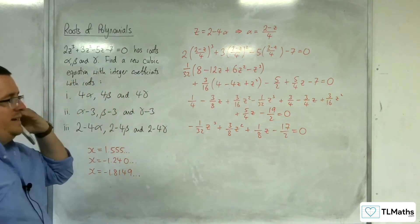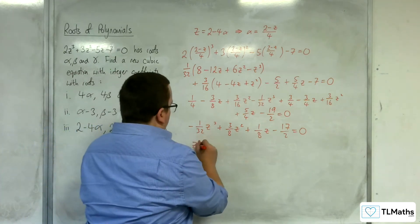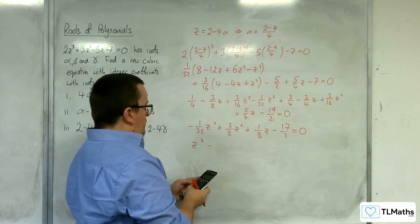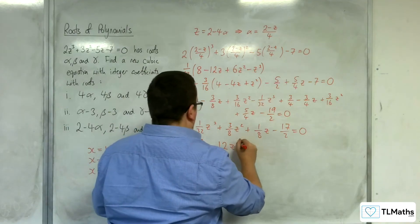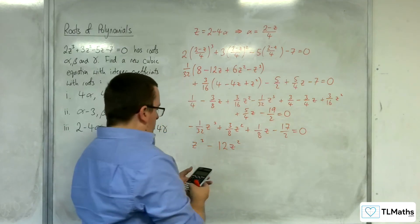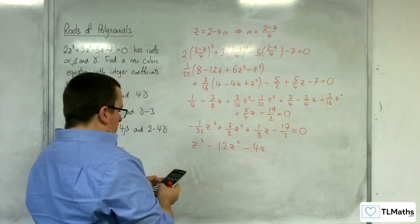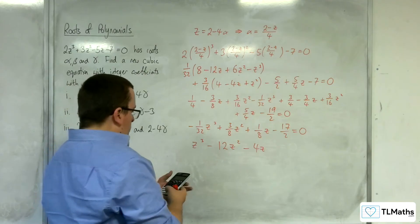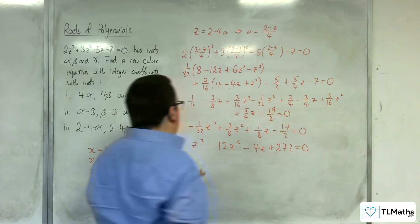Now we need integer coefficients, so I'm going to multiply through by minus 32. So we get z cubed, then minus 32 times 3 eighths is minus 12z squared, then minus 32 times 1 eighth is minus 4z, and then minus 32 times minus 17 over 2 is 272, equalling 0.